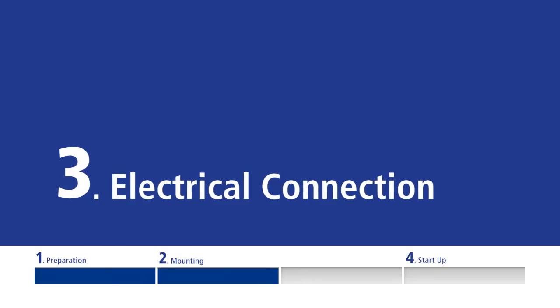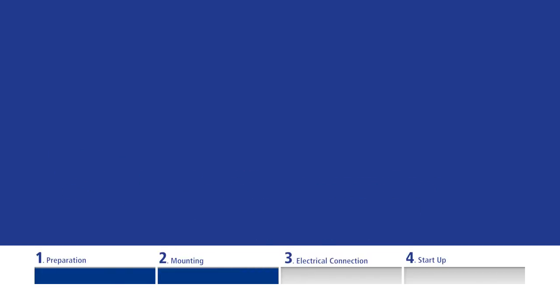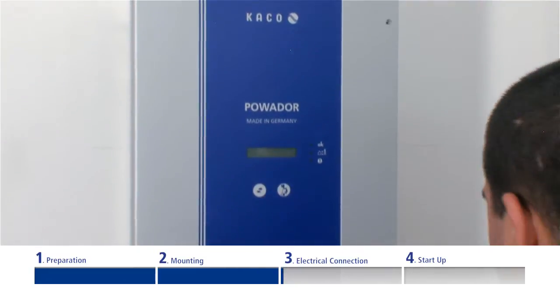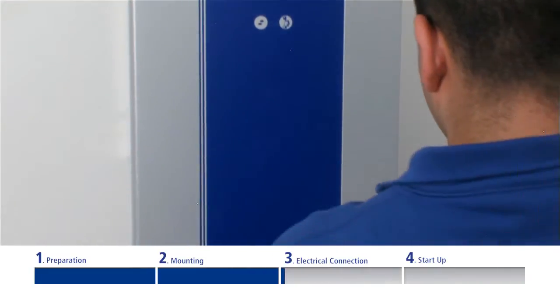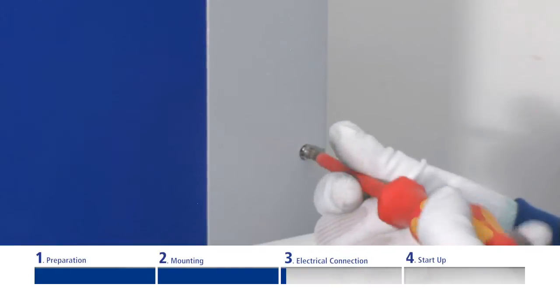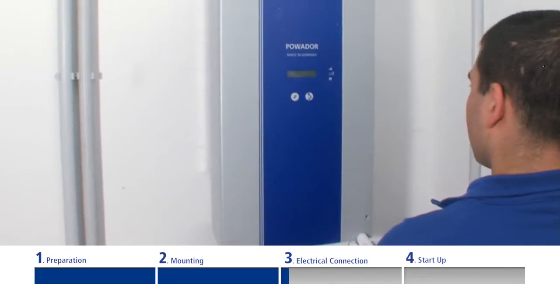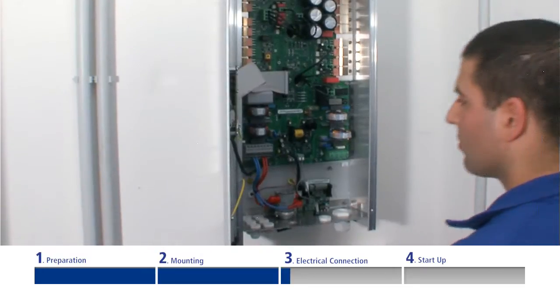The electrical connection. The inverter connection is established via PCB terminals in the inverter's connection area. The door of the housing must be opened to do this. Temporarily remove the two Phillips recessed head screws on the right side of the door housing.